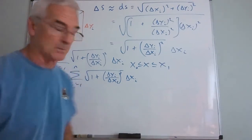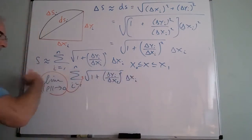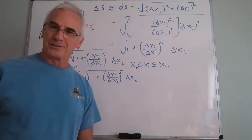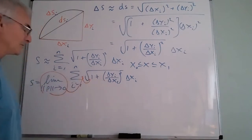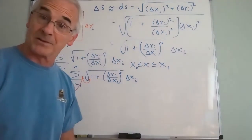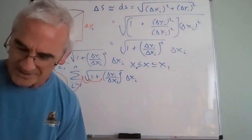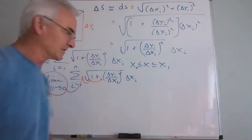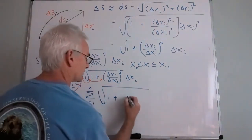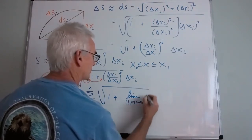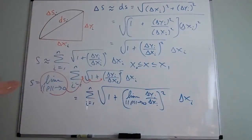We know the limit of a sum is the sum of the limits — that's one of the most important limit properties. So I'll move the limit inside the summation. The limit of the root is the root of the limits. The limit of a sum is the sum of the limits. The limit of a square is the square of the limit. I've now moved the limit all the way inside: the limit as the norm of the partition → 0 of Δyᵢ/Δxᵢ.